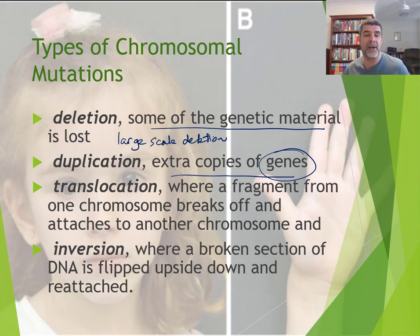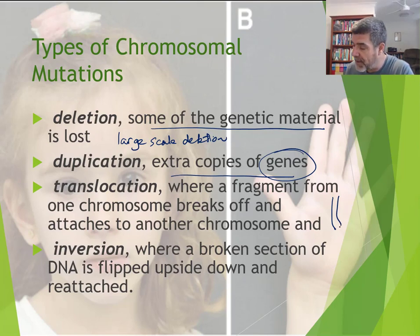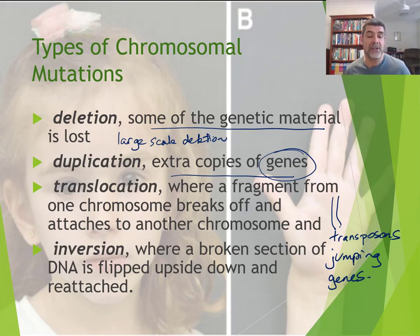Translocation is where fragments from one chromosome break off and attach to another. We talked a little about jumping genes previously — transposons are a particular example of natural mutations that occur as genetic material moves from one place in the genome to another. Translocation is one of these examples where large chunks of chromosomal material move from one chromosome to another. We can also have inversion, where broken sections of DNA are flipped upside down and reattached, so the genes appear in reverse order on the DNA strand.